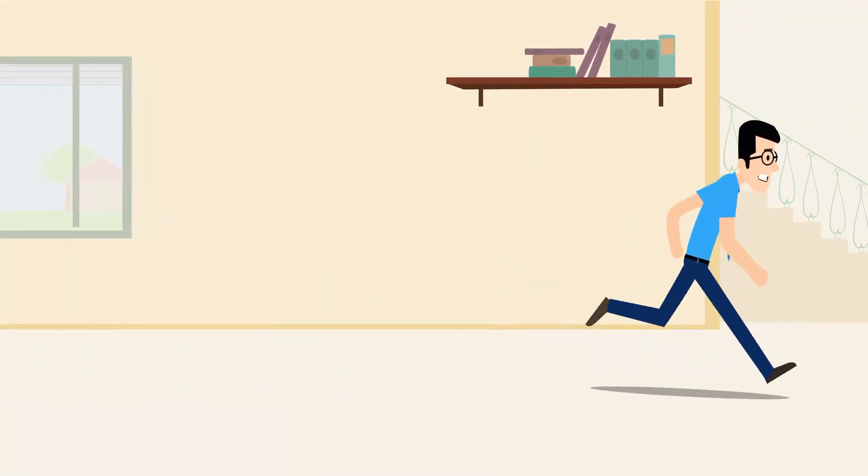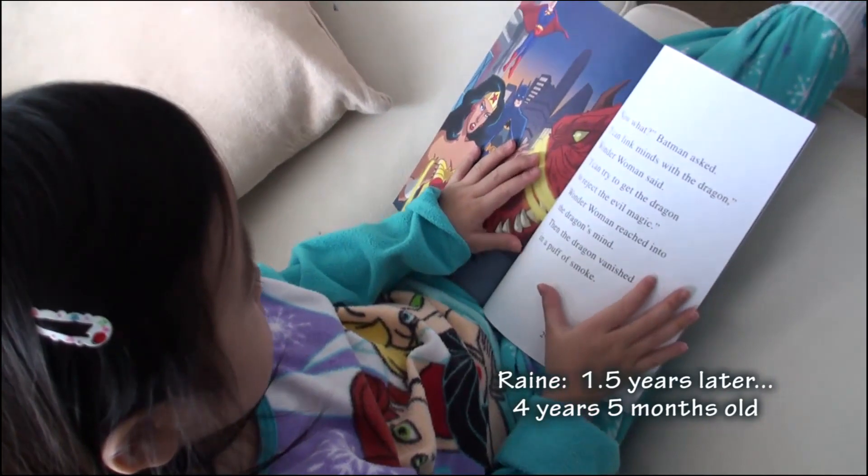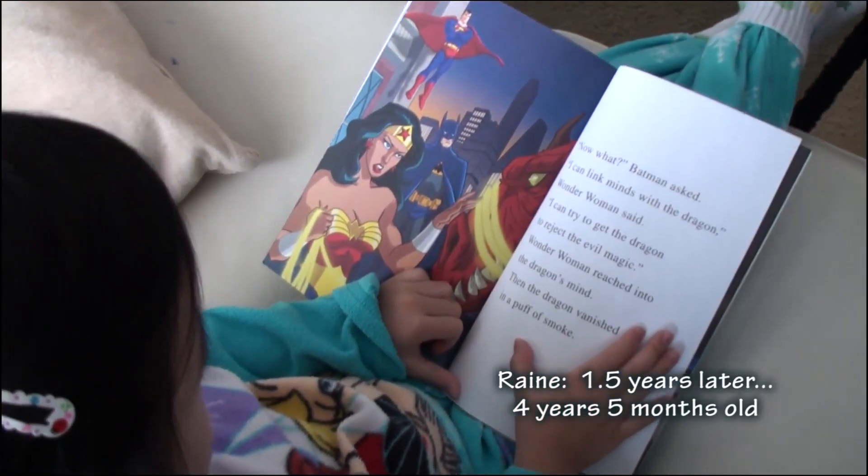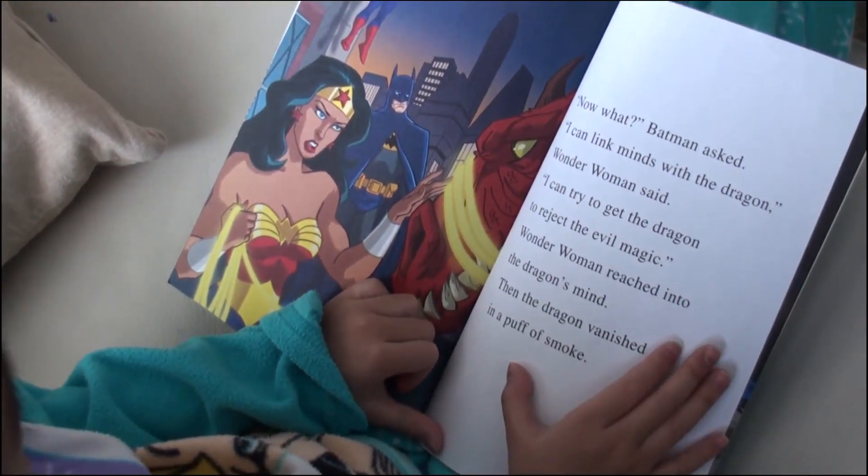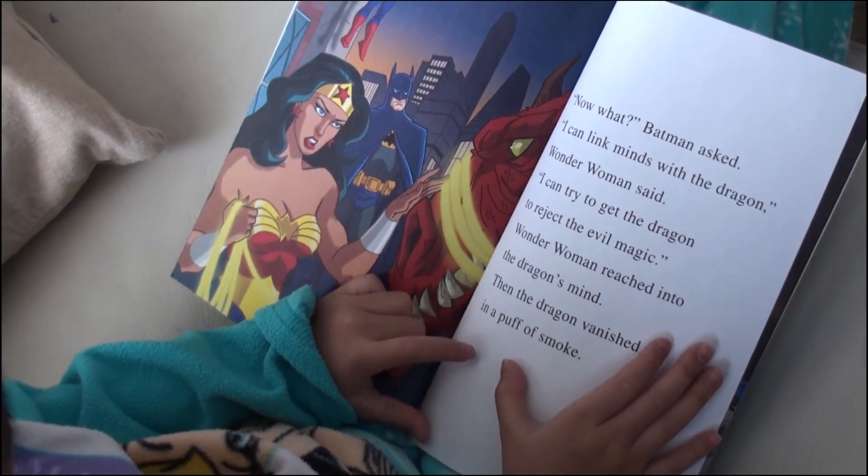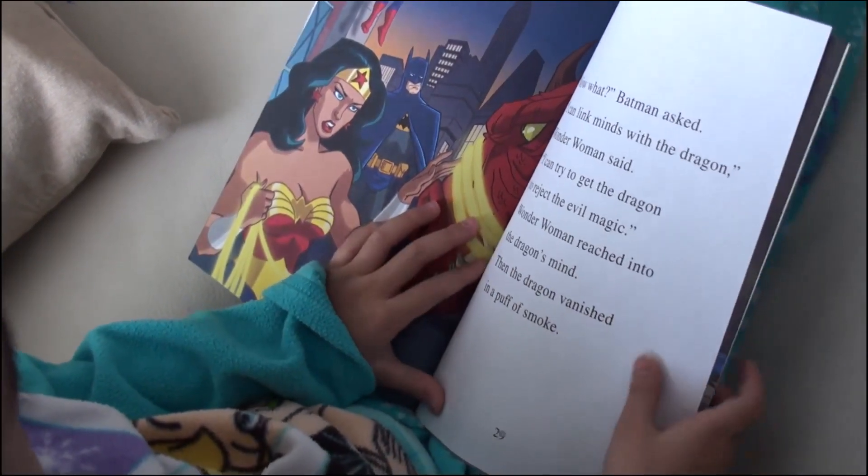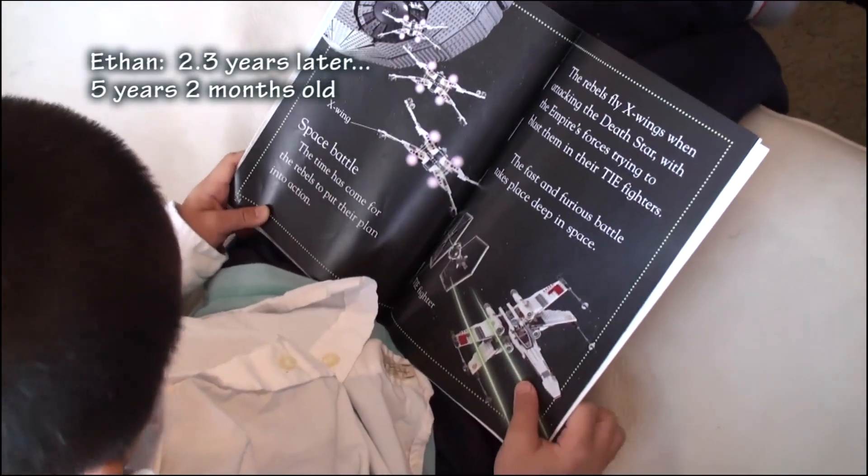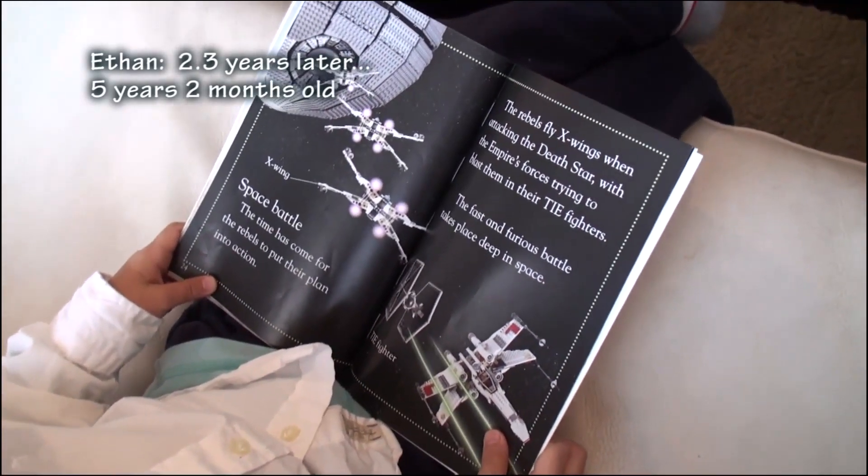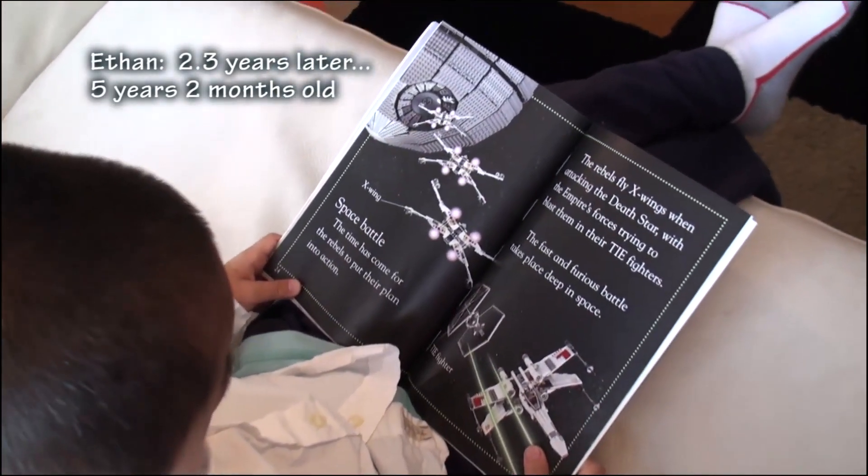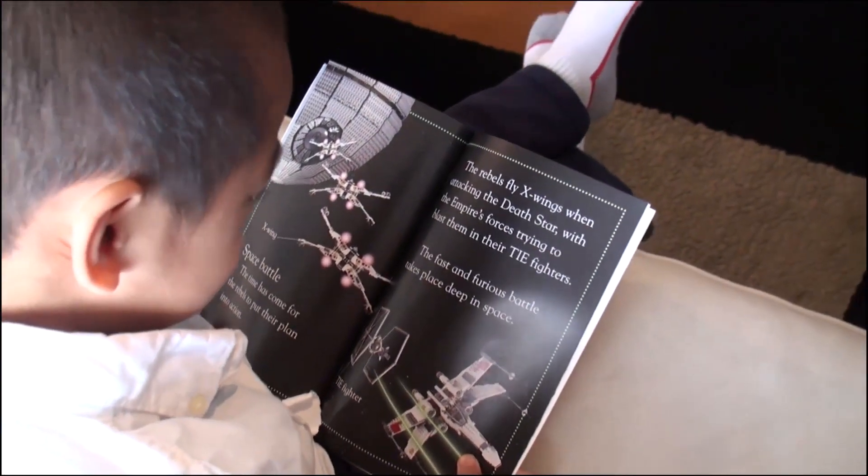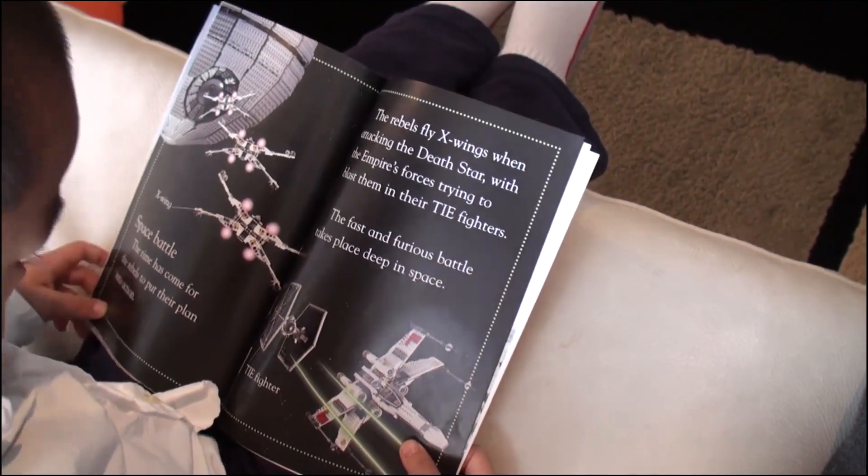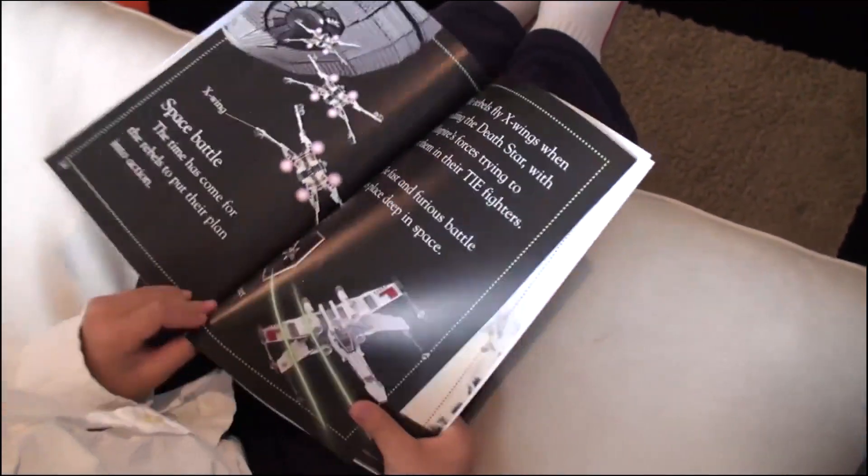Now, let's fast forward one and a half years and watch this. Batman asks, I can lick mines with the dragon. Wonder Woman says, I can try to get the dragon to reject the evil magic. Wonder Woman reached into the dragon's mind, then the dragon vanished in a puff of smoke. Space Battle. The time has come for the Rebels to put the plan into action. The Rebels fly X-Wings when attacking the Death Star with the Empire forces trying to blast them in TIE Fighters. The best and fiercest battle takes place deep in space.